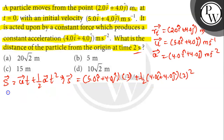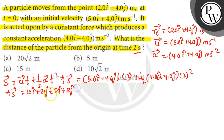So that will be s equals 10 i cap plus 8 j cap plus 8 i cap plus 8 j cap. Therefore, s vector equals 18 i cap plus 16 j cap meter.